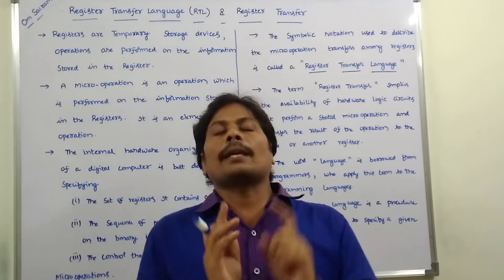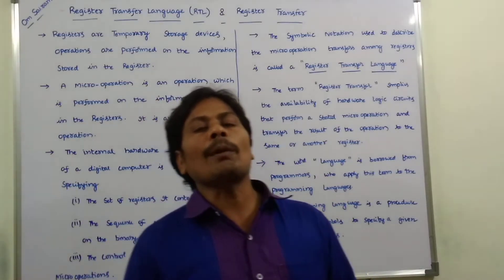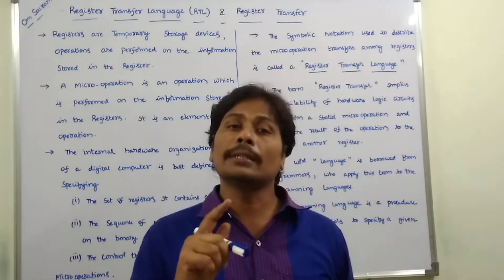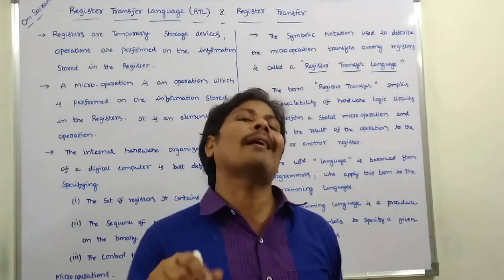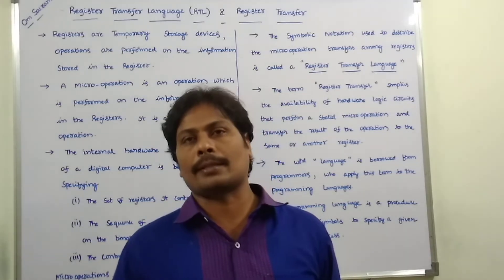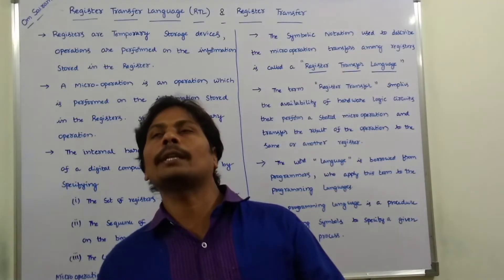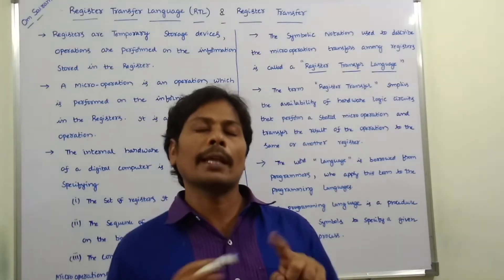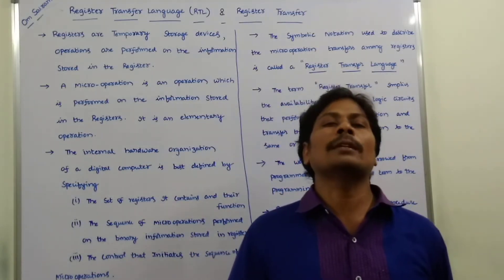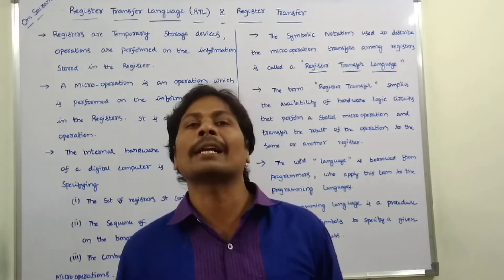Next, micro operation. A micro operation is an elementary operation that can be performed on the information stored in the register. Whatever the information stored in the register, on that information we can perform the operation. That operation is called a micro operation.